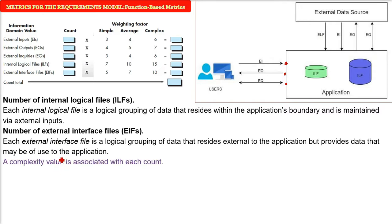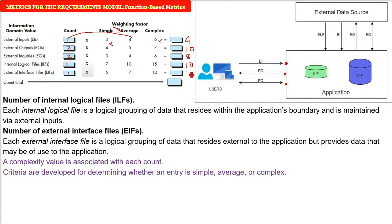So you have an application, inputs are coming from the user, there is external data source. Now we will assign a complexity value to each count. For example, say external inputs EIs are 1, EOs are 2, EQs are 2, ILFs 1, EIFs 1. So now this is the first column. Now you say I have to compute regarding my functionality point as simple or average or complex. So if you want to compute it as average, you don't have to worry about the first and third row. So 4 into 1, 2 into 5, 2 into 4. I am multiplying the first with the average row. Then 1 into 7 is 7. Now we are going to add them up, summation.